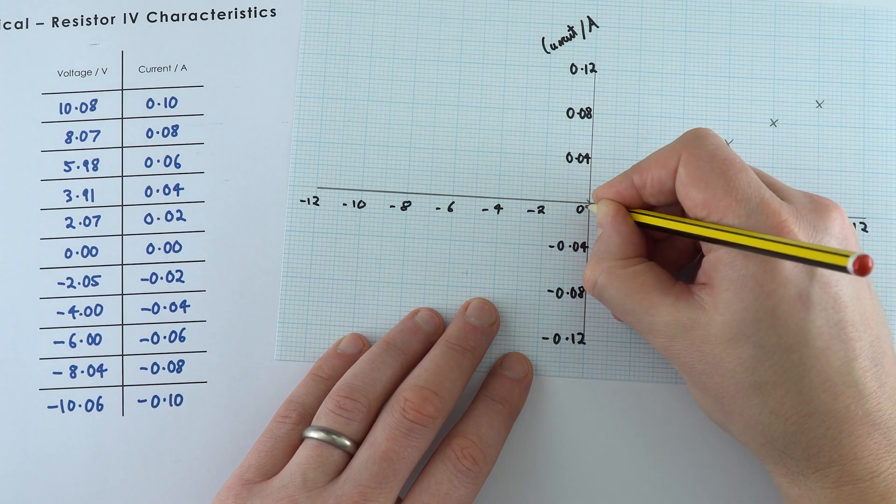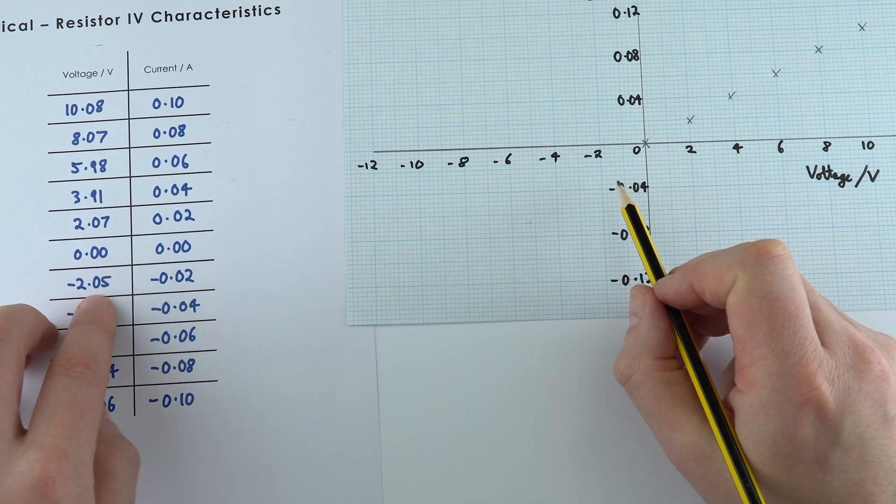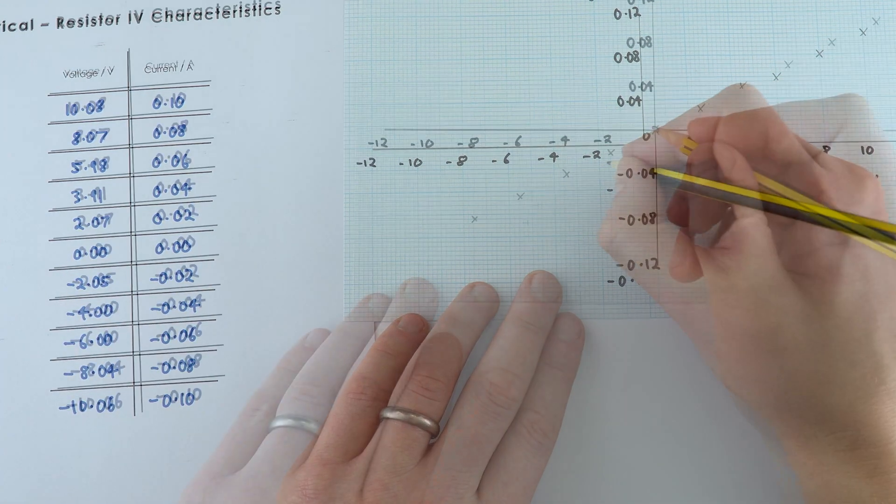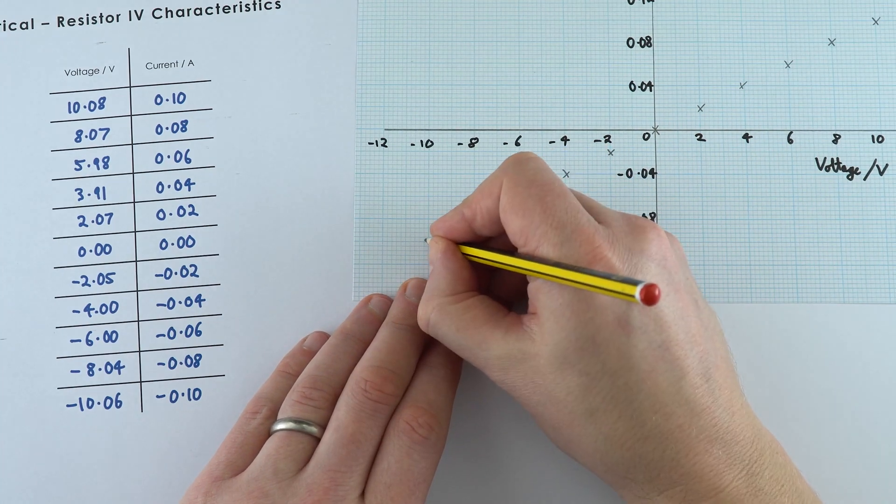It goes through the origin in the middle, and then when it's minus 2, it's minus 0.02, and then finally over here.